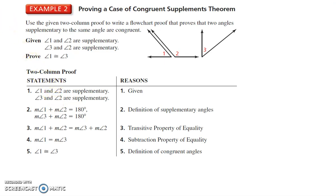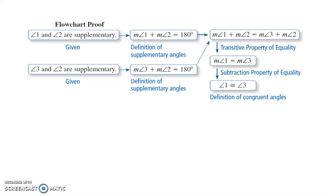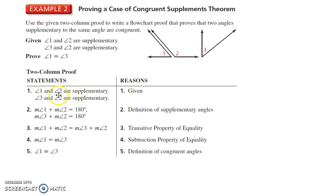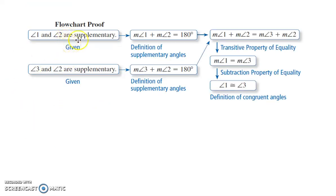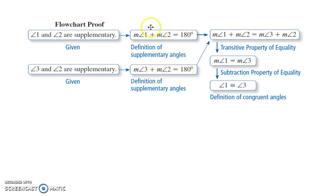Transferring this into a flowchart proof looks like this. Notice that in the two-column proof we had two things that were given. In a flowchart proof, we can list them together or one after the other. If two things are given, we make two different lines, and then one flows from the other, leading into one statement. From angle 3 and angle 2 being supplementary, we conclude they add to 180. Using the transitive property, if this equals the same thing as this, then these two equal each other.